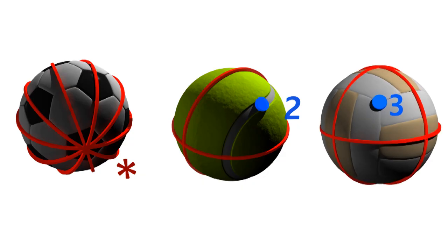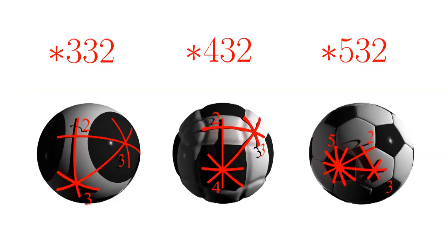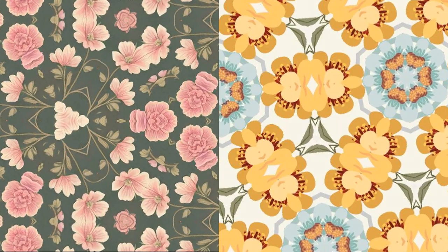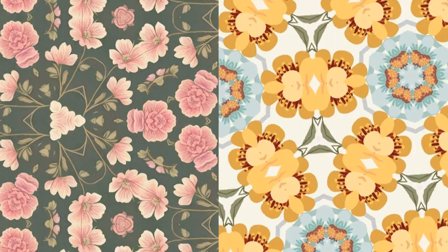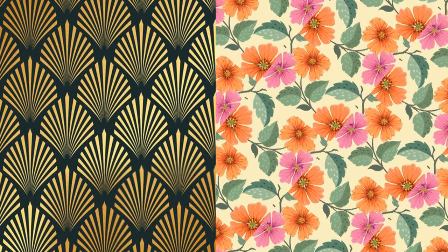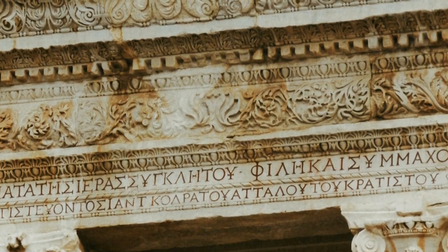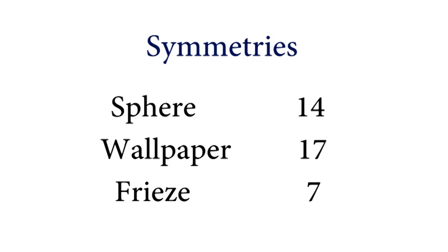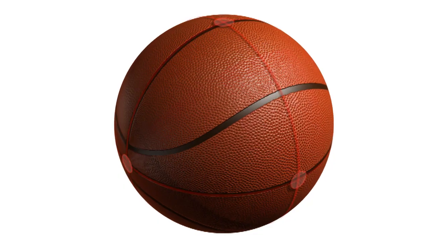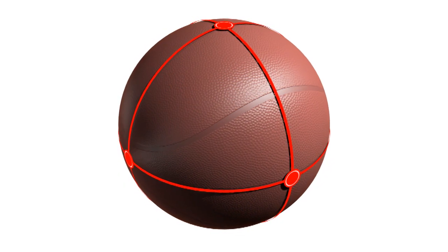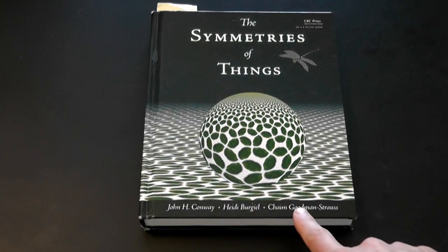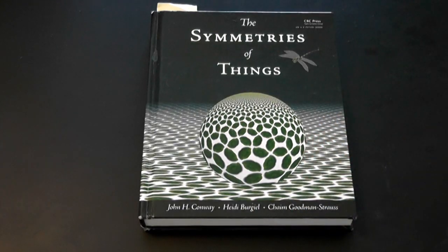How many symmetries are there? For a ball, there are 14 — 14 ways a ball can be symmetrical. For wallpaper, there are 17 ways that wallpaper can be symmetrical. For a frieze, there are seven symmetries. Now, how did I come up with these numbers? I'm going to show you a very clever, very interesting way of categorizing all the different types of symmetry. This is based on a wonderful book by John Conway, Burgiel, and Goodman-Strauss called The Symmetry of Things.